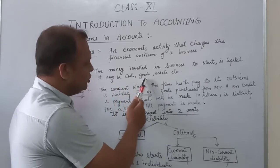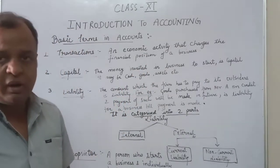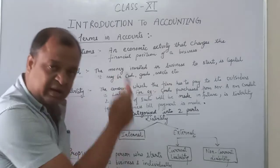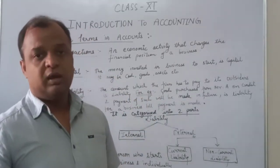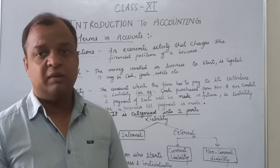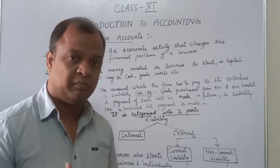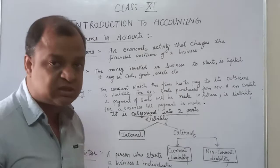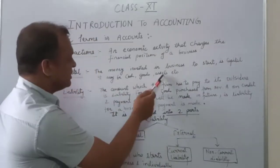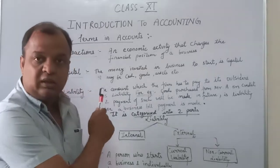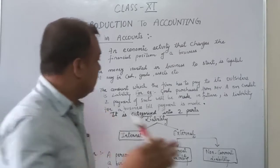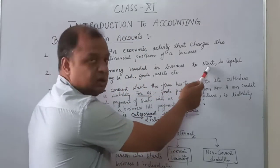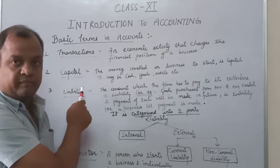Capital can be in the form of cash, goods, or assets. With my example, rupees 5 lakh is money invested in cash. Now suppose Mr. A had a machine of rupees 50,000 with him and that machine can be used in his own business. So the machine which he will bring into the business is also treated as capital, because that machine is being introduced in business at the time of its start.